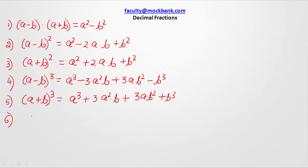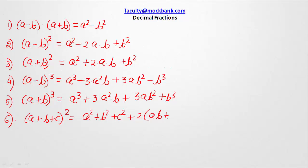The sixth very important rule for us to understand is the value of (a + b + c) whole square. This equals a² + b² + c² + 2ab + 2bc + 2ca.